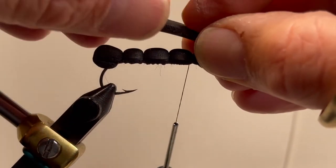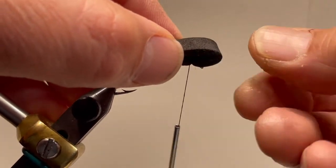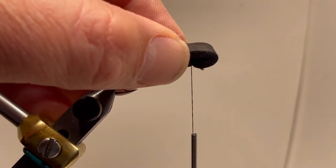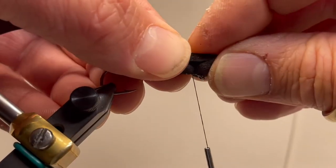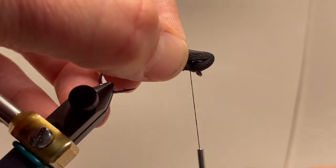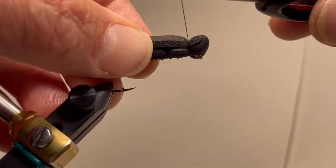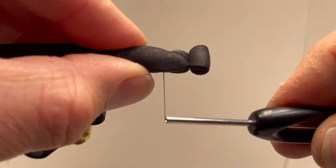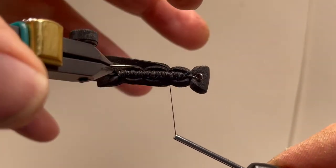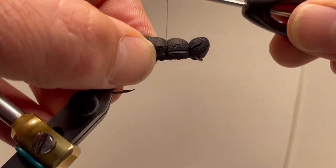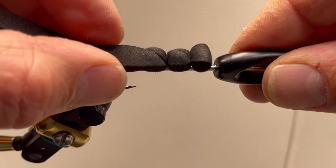And again, we're going to double over the foam again. Make a little bit of an over wrap to the eye of the hook and secure that. And then we're just going to cross right over the back, even with where we had our segmentation on the first wrap forward. Secure that. Go back one more time.